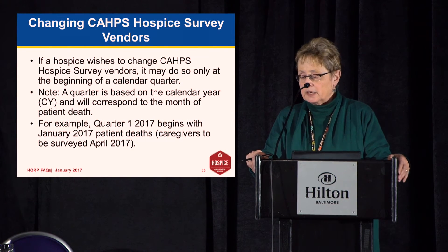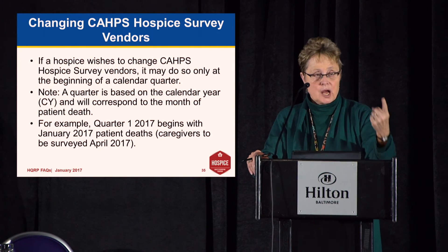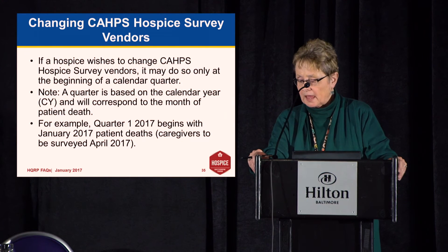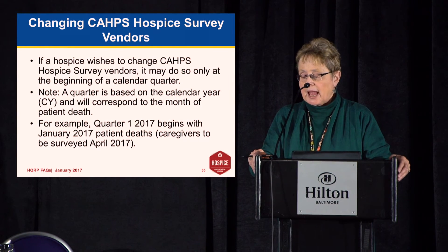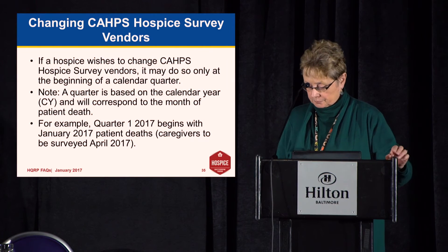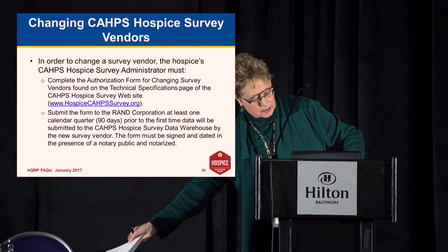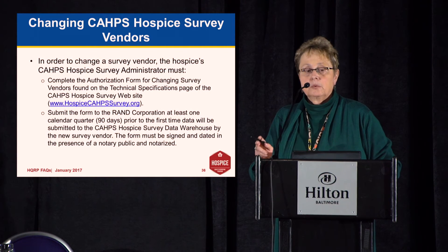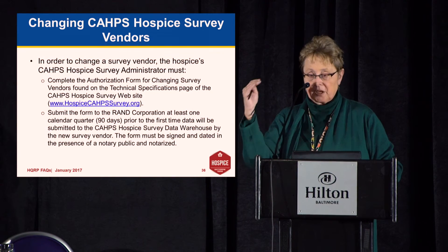Quarter one in 2017 starts with January of 2017, and that is referencing the patient deaths, not when the survey is distributed in April, but the patient deaths in January. There is a form — your survey administrator must complete an authorization form for changing vendors, found on the survey website. You have to submit the form at least one quarter — 90 days — before the time the data is submitted. This form must be notarized.